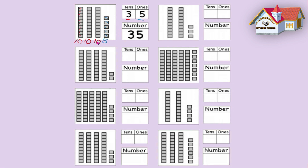When you put these two numbers together, we make 35. You know three tens equals 30, so you could count in tens three times: 10, 20, 30.